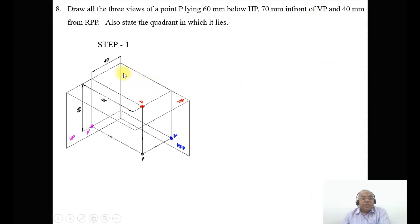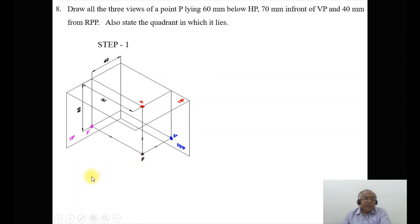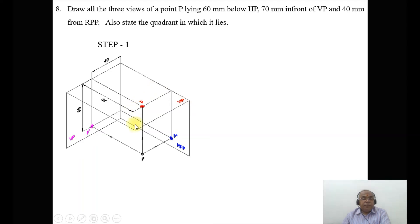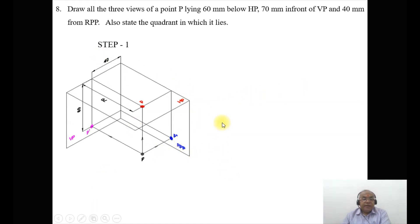When you want to see the image on the right profile plane, all these planes are transparent. Whether you look from the left side or the right side, the image is always going to be on the right profile plane, because the viewing direction is perpendicular to that plane. The left side view can therefore be seen on the right profile plane.